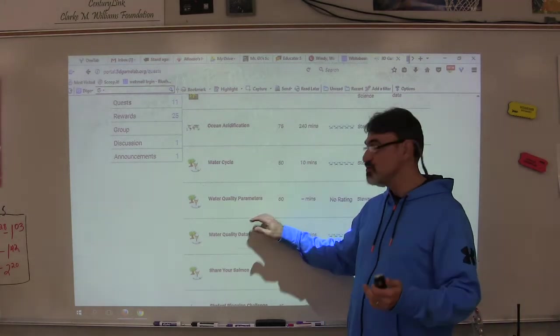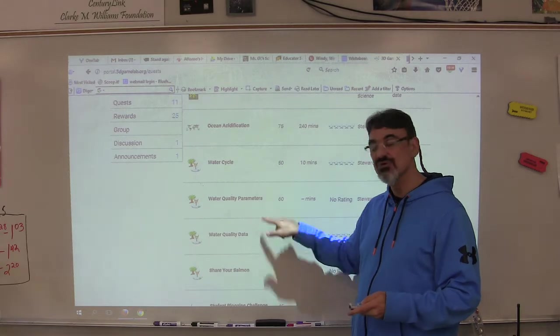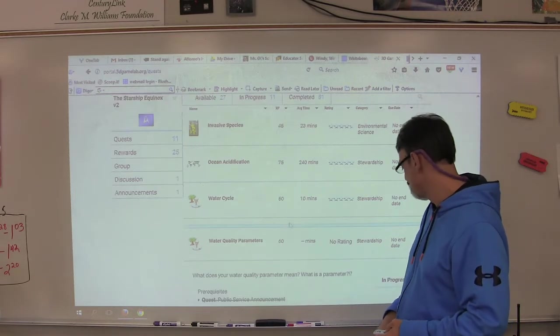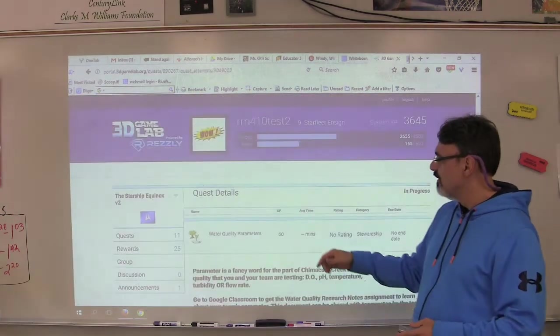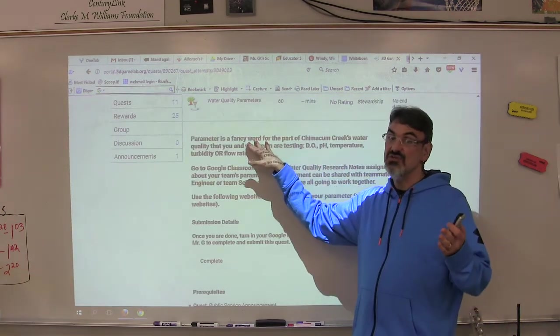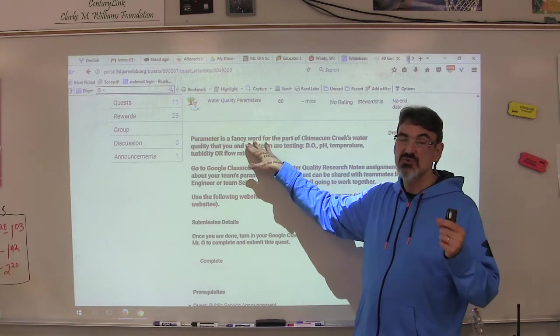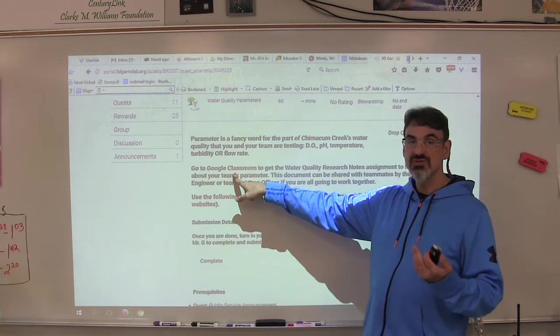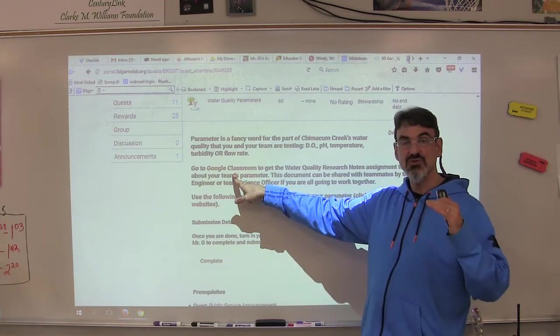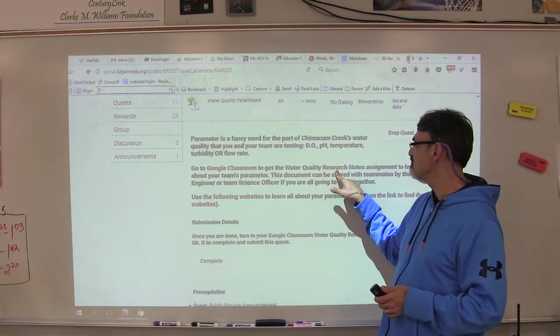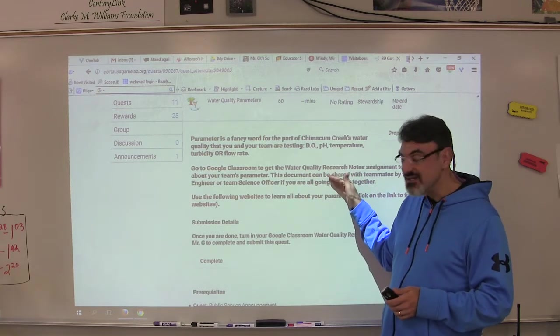You're going to go to the water quality parameters quest. When you start that quest, it tells you if you don't know yet what a parameter is, what the word parameter means, you've got a link here to Google Classroom. The assignment with the graphic organizer to take notes is water quality research notes - it says it right here.